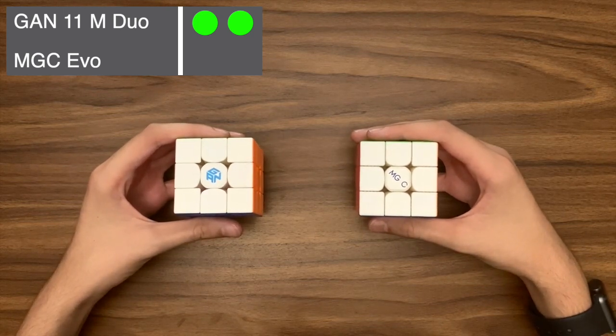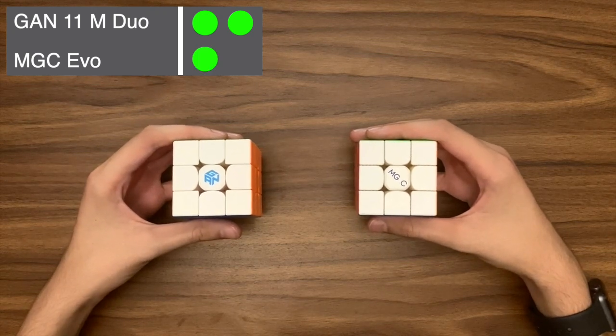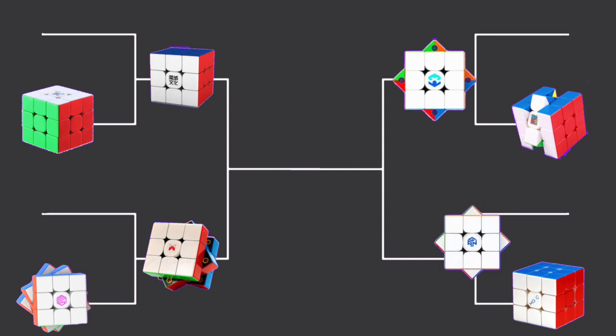Although it doesn't matter because the Duo has won, there is no way that I can give the GAN Cube value for money. So that goes to the Evo. So the GAN 11M Duo moves on to the next round.